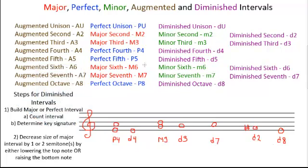Since it is a perfect fourth from E to A, we have to lower the top note by one semitone. So we take that A and lower it by one semitone to an A flat. By doing that, we now have our diminished fourth, lowered by one semitone.